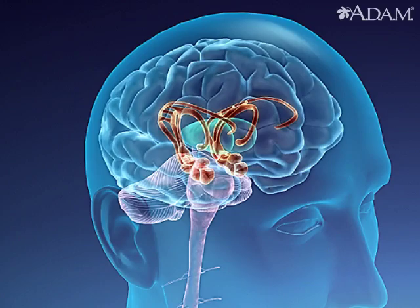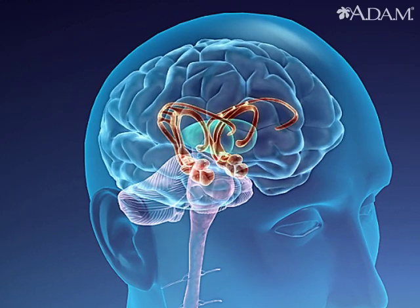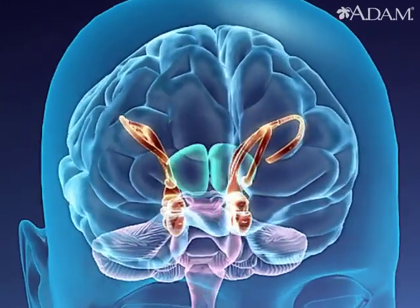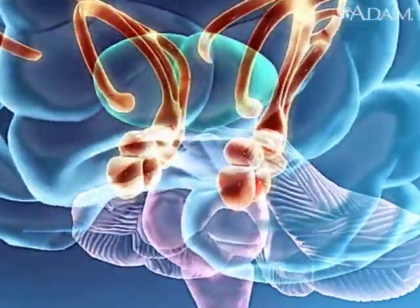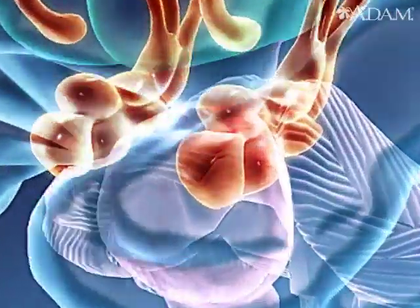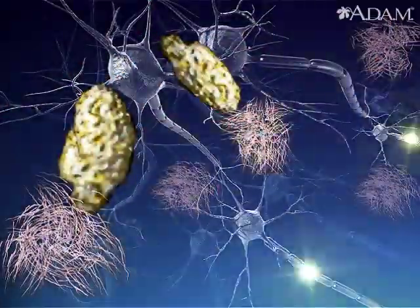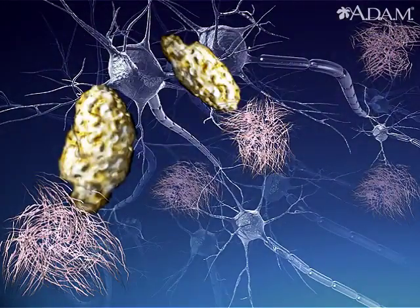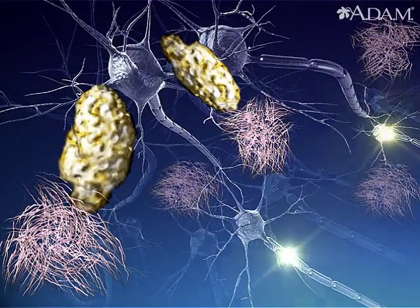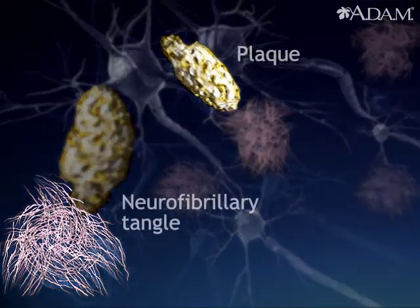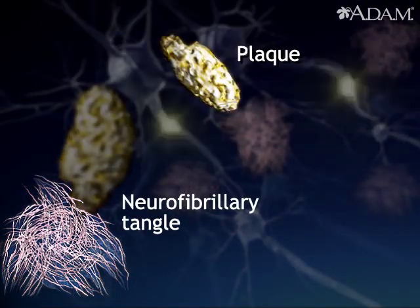A plaque is an abnormal cluster of protein fragments. Such clusters can be found between nerve cells in the brain of someone with Alzheimer's. A microscope will also show damaged nerve cells. In them are tangles, called neurofibrillary tangles.